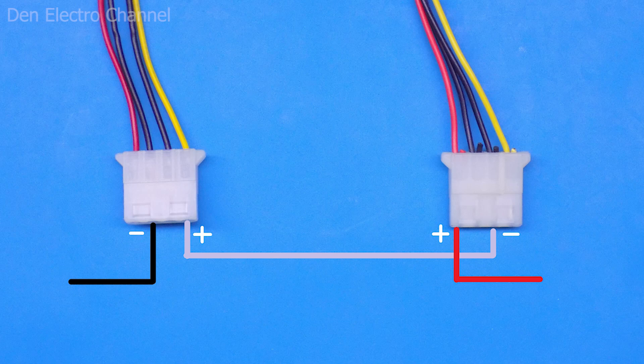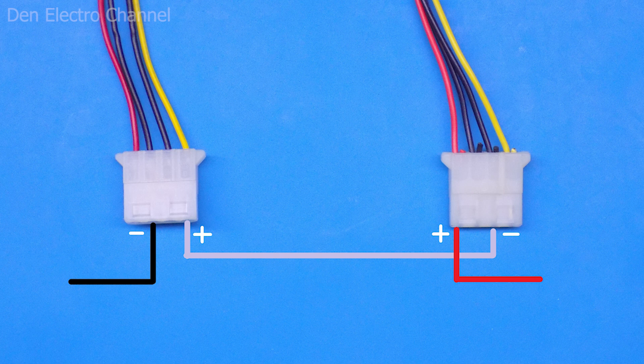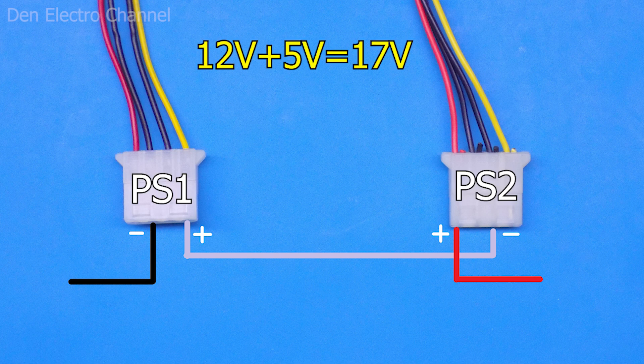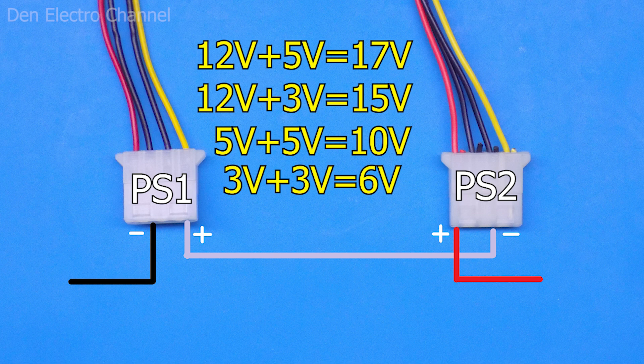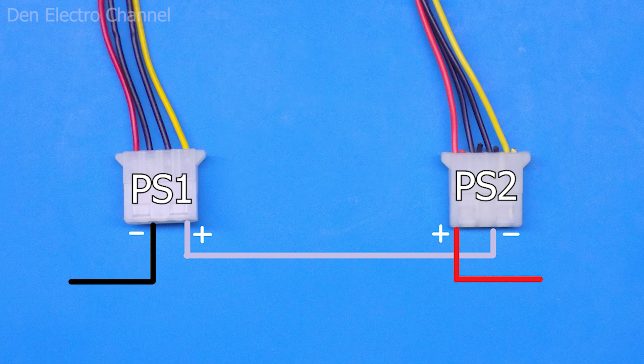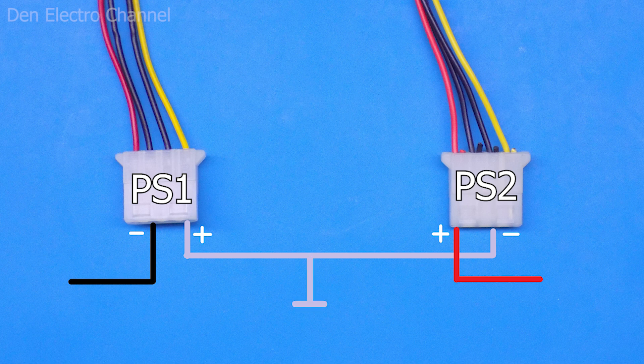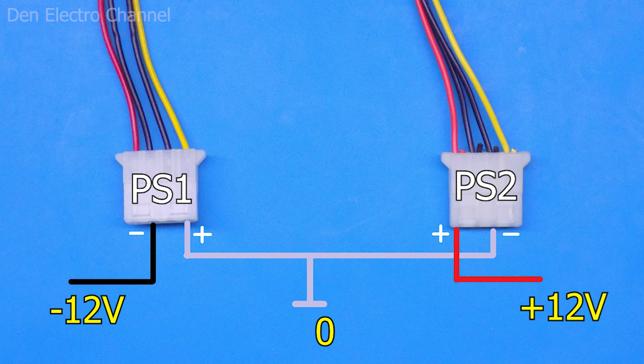By connecting power supplies in series, you can get not only 24 volts, but also other voltages. For example, on the first one you can take 12 and on the second one 5 volts and then in total you will get 17 volts or do 12 plus 3 or 5 plus 5 or 3 plus 3. In addition to all this, you can make a bipolar voltage. If you make a tap from the middle, you will get plus or minus 12 volts. It can be used to power audio amplifiers.